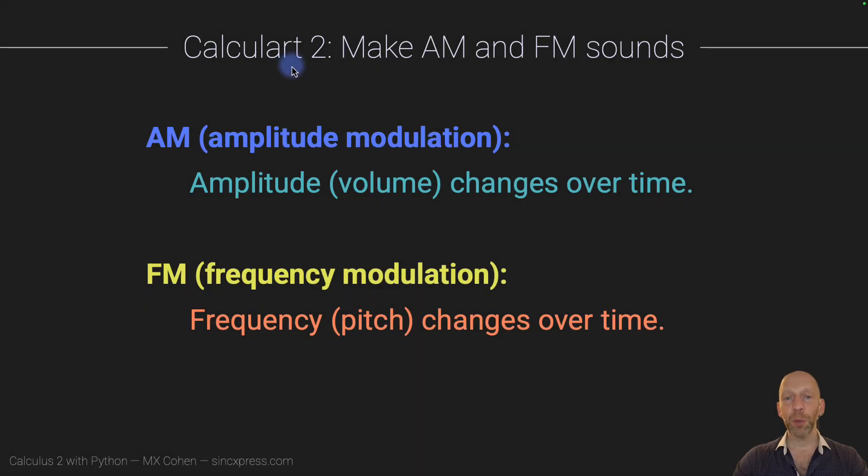Now for Calculart 2, we are going to separately create amplitude modulated and frequency modulated sounds. These are just different ways of changing the characteristics of the tones over time, whether we're changing the volume, so the amplitude, or the frequency, which is the pitch. And of course, you recognize these two terms from the two radio organizations. So we have AM radio and FM radio, and this is the mechanism of the two.